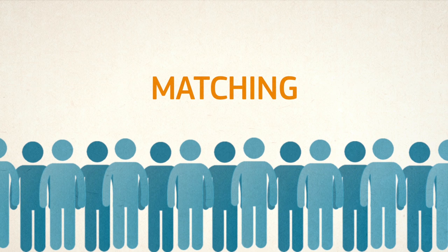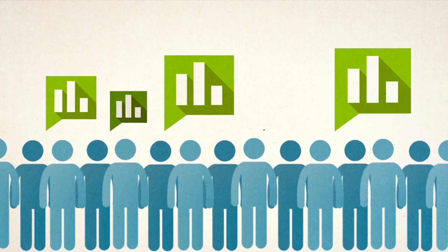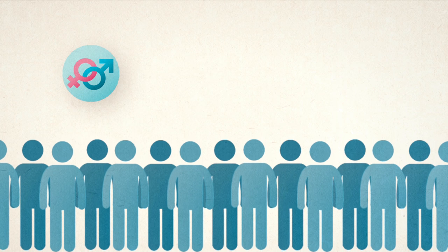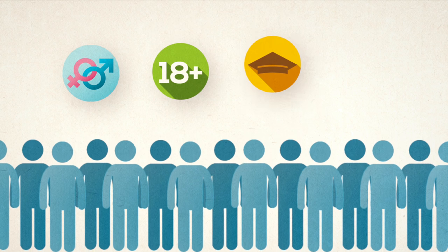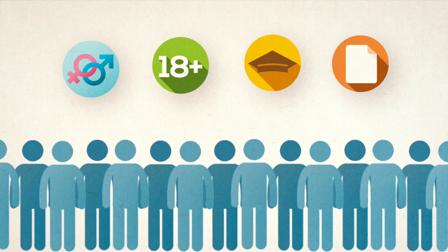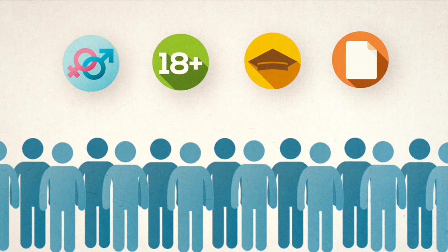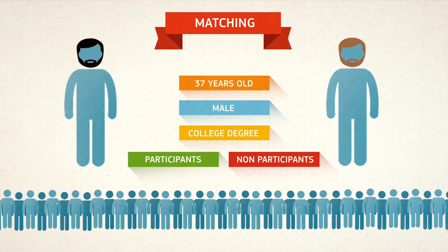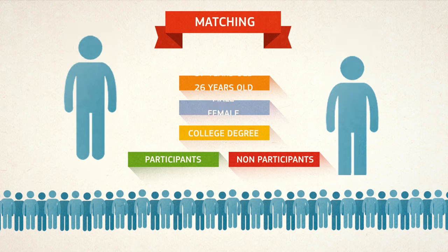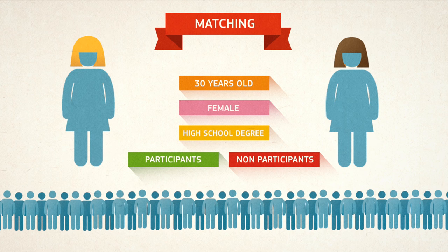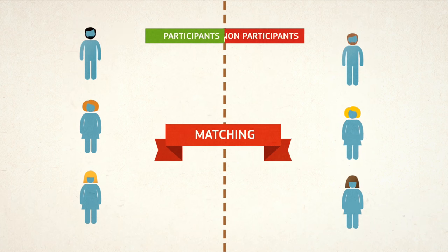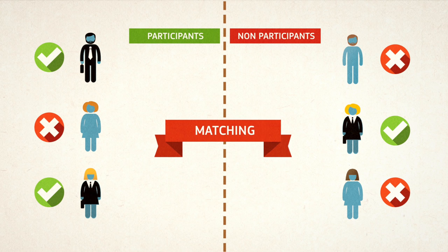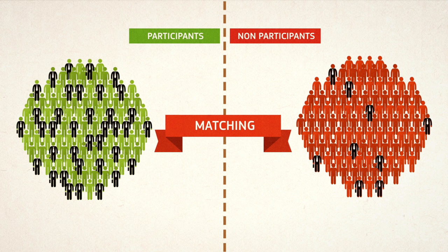One method is matching. In this case, data may come from a survey, where for each individual in the sample, we know the gender, age, education level, participation in a training programme, and so on. We match each participant with a non-participant who has the same age, gender, and education level, and the only difference between the two is participation in the training. Then for each pair, we compute the difference in the employment status, and the average of all these differences gives us the impact of the training programme.